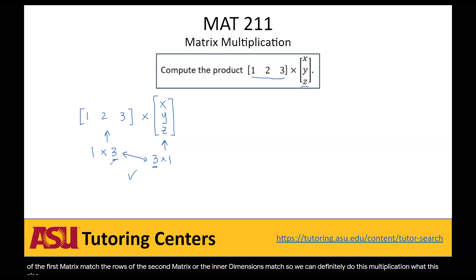What this also means is that our outer dimensions here, our rows of our first matrix and our columns of our second matrix, are going to be the dimensions of the resulting matrix. So we know whatever this equals, it's going to be a 1 by 1 matrix.